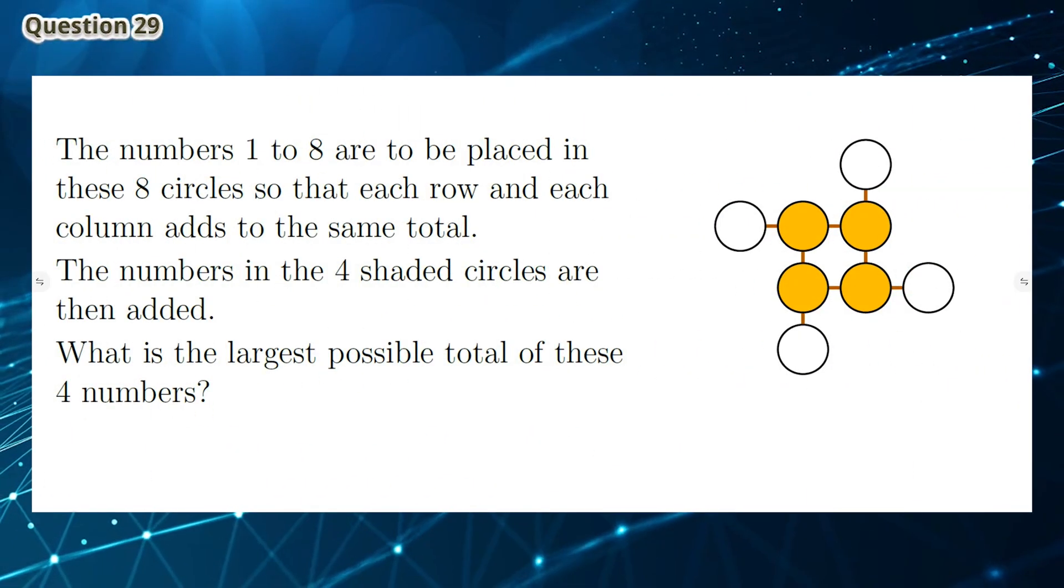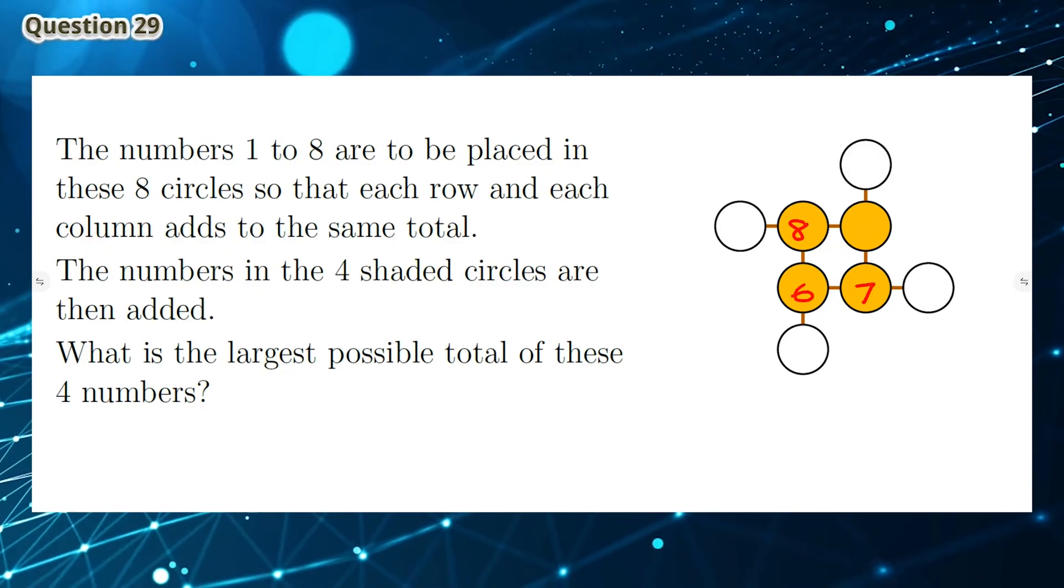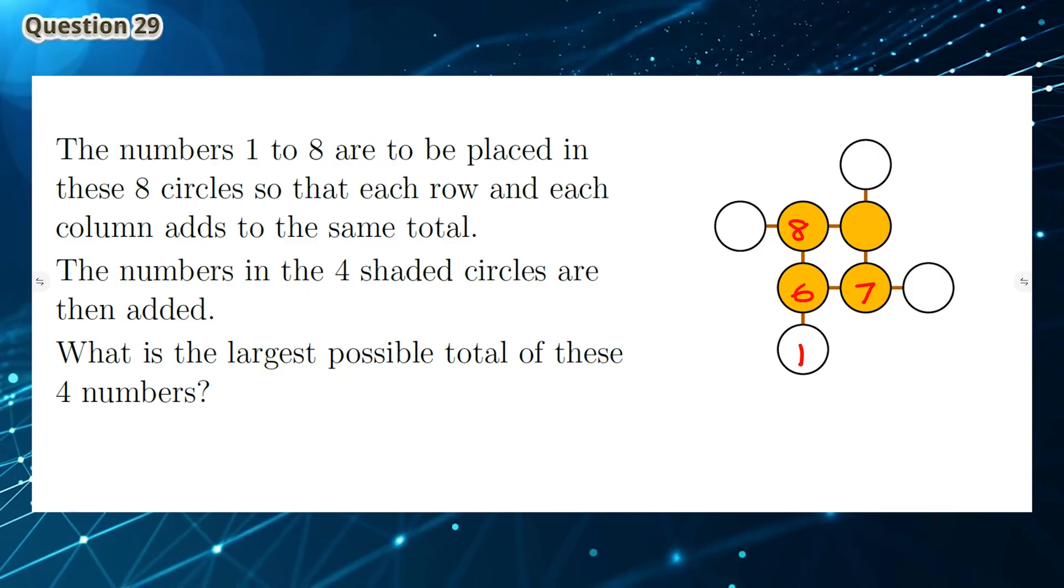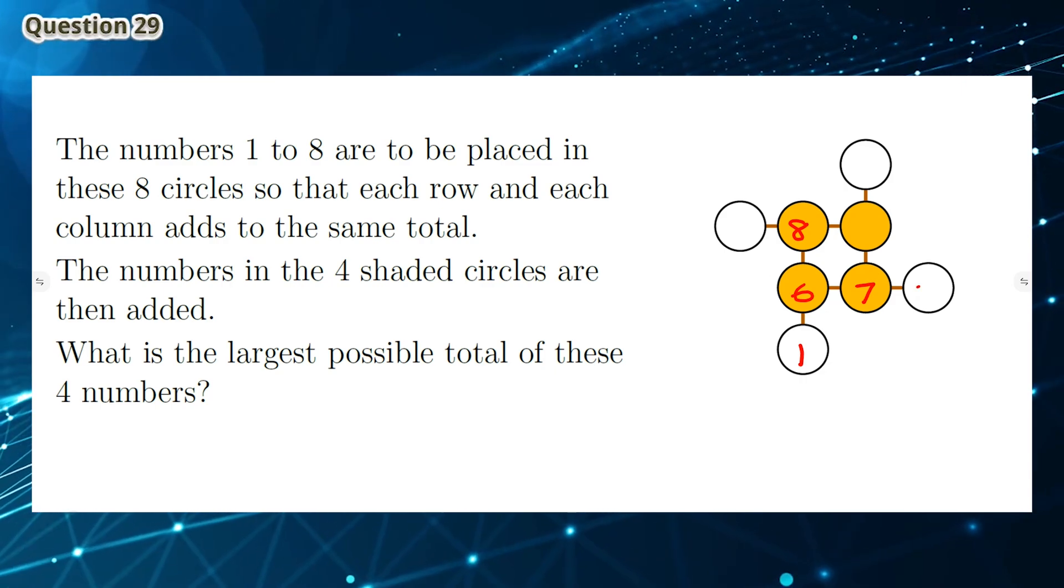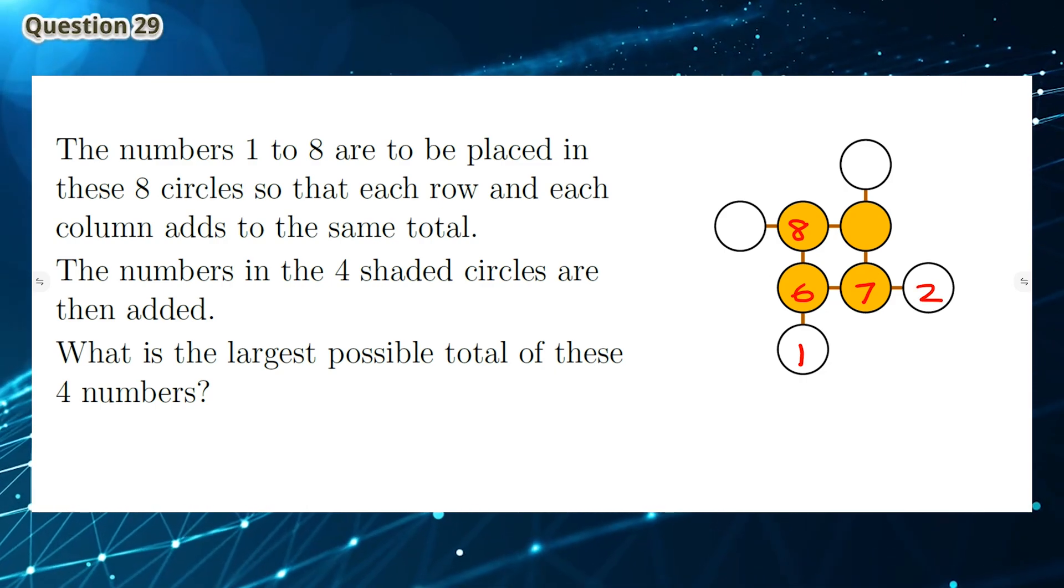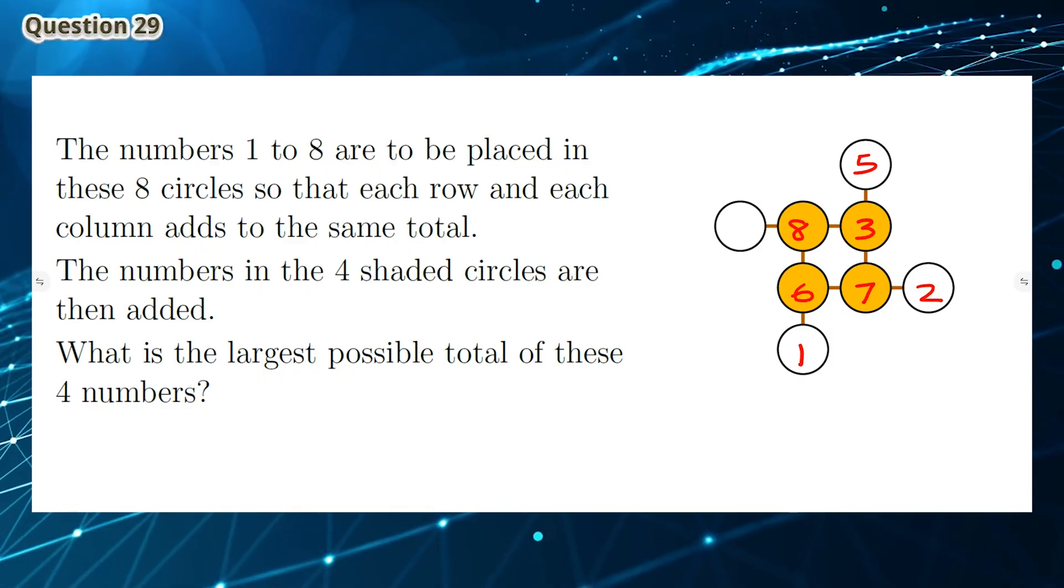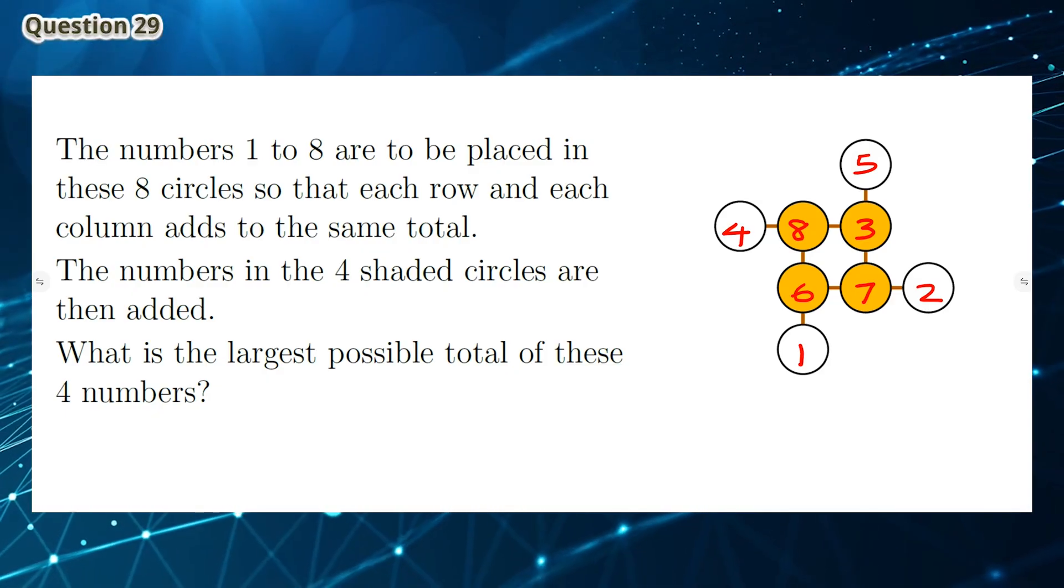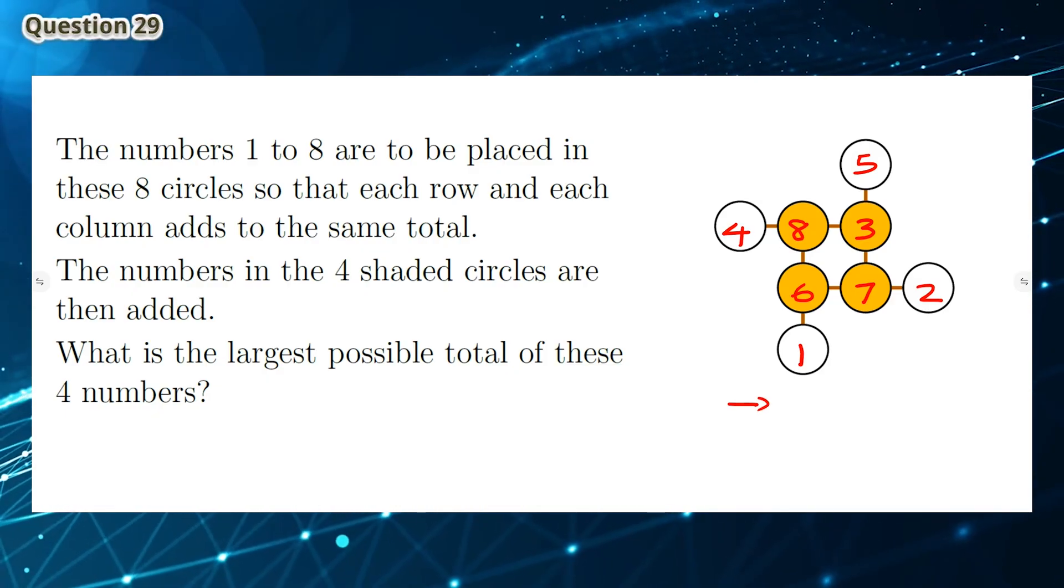Question 29: The largest numbers are 8, 6, and 7, so we can place them as shown. The smallest one is number 1, so we want to put it in one of the white circles. The next smallest is number 2, so we also want that in a white circle. Next, we can put the number 3 in the shaded circles, and the numbers 5 and 4 are shown. So the largest possible total of these 4 numbers is 8 plus 6 plus 7 plus 3, which gives you a total of 24.